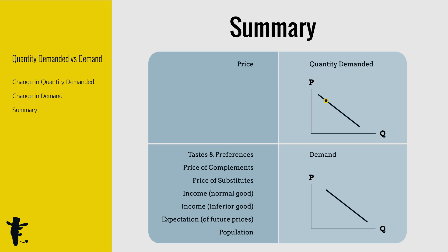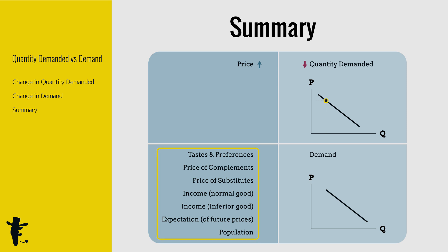Let's add graphs into the summary. When price decreases, quantity demanded increases — it's a movement down the demand curve. When price increases, quantity demanded decreases — it's a movement up the demand curve. When other factors change, it's a change in demand, so the entire demand curve shifts. When any of these factors change in the respective directions, demand increases and the demand curve shifts right. When these factors change the other way, demand decreases and the demand curve shifts left.